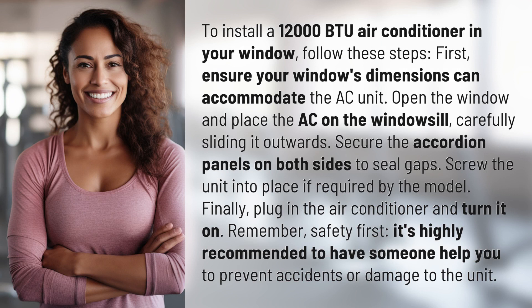First, ensure your window's dimensions can accommodate the AC unit. Open the window and place the AC on the windowsill, carefully sliding it outwards. Secure the accordion panels on both sides to seal gaps. Screw the unit into place if required by the model.